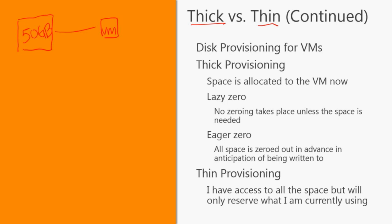When I thin provision, what I'm saying is I'm going to take this 50 gigabytes of space and still give it to this virtual machine, but I'm only going to take what I use. So if I'm using 30 gigabytes, that's what I'm going to use. The rest — this 20 gigabytes — can be usable by anyone else who has access to the data store. So with thin provisioning, I'm only taking what I use.